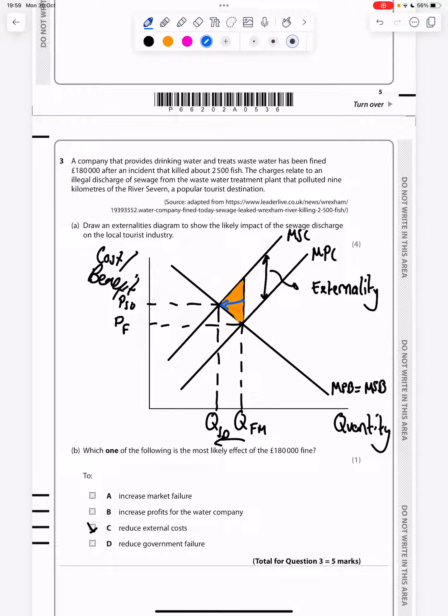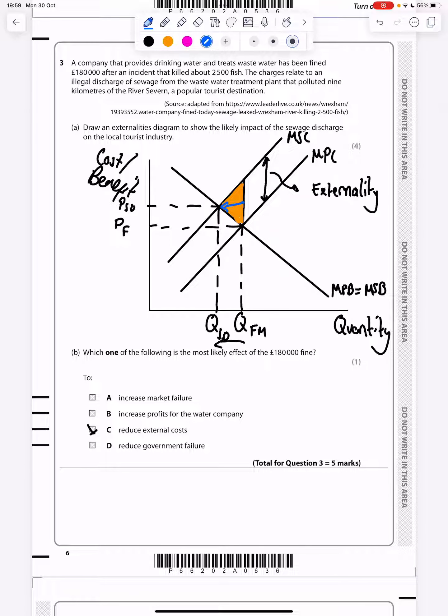Which one of the following is the most likely effect of the £180,000 fine? It is to reduce external costs, as you can see there. It's not increasing market failure, it's helping to reduce the production and the money will be used to help clean up the river. Increased profit is wrong because they're being fined. Reduce government failure is wrong, it's got nothing to do with government failure. The final answer is C, reduce external costs.